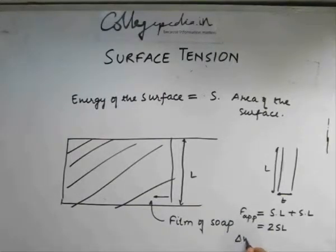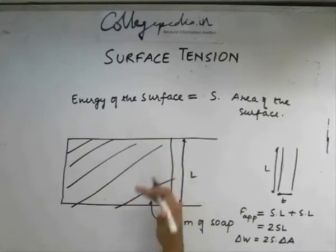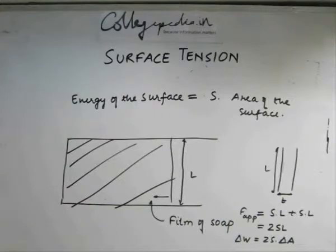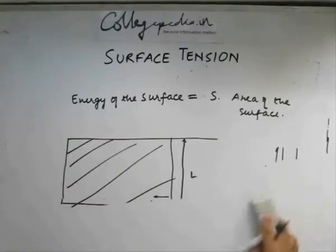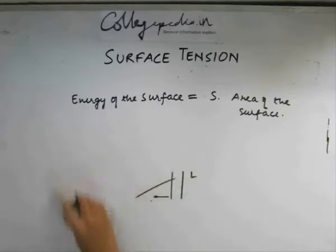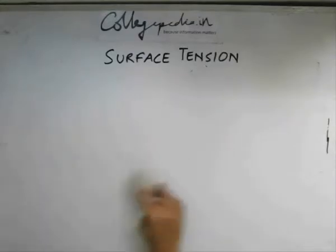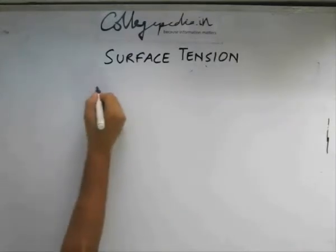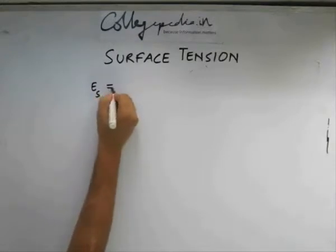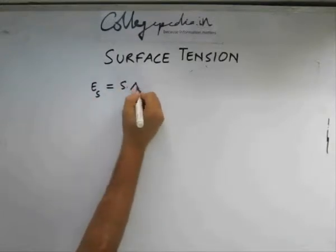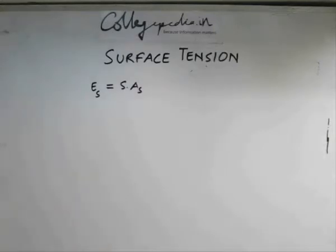Also the work done will be 2 times s into delta A which is the change in area which takes place while doing that work. Let us consider a small problem related to this. Please remember this formula which I just stated: energy of the surface is equal to surface tension times area of the surface.